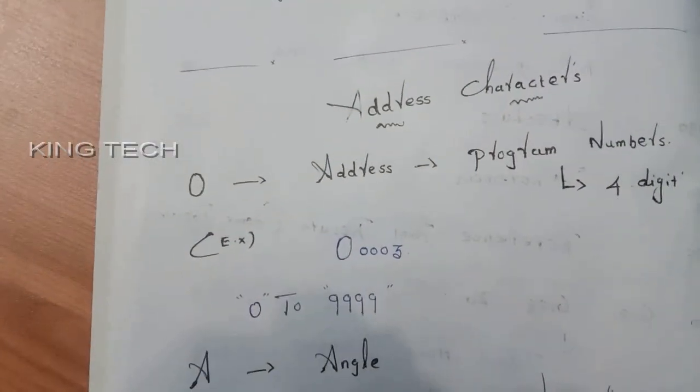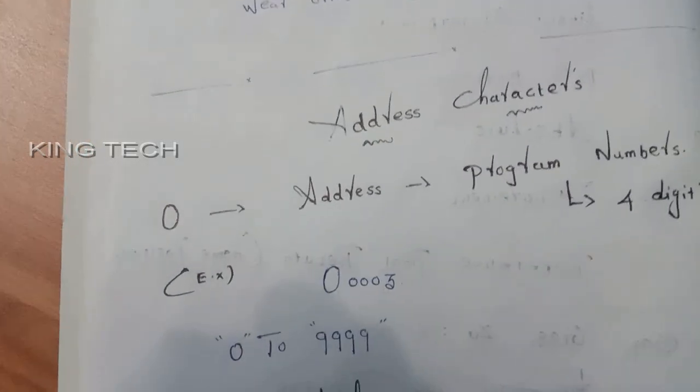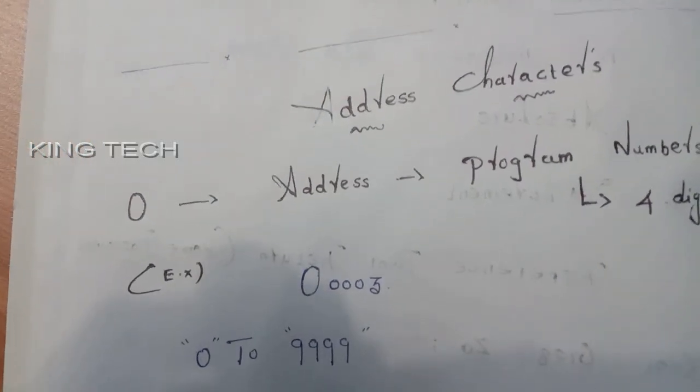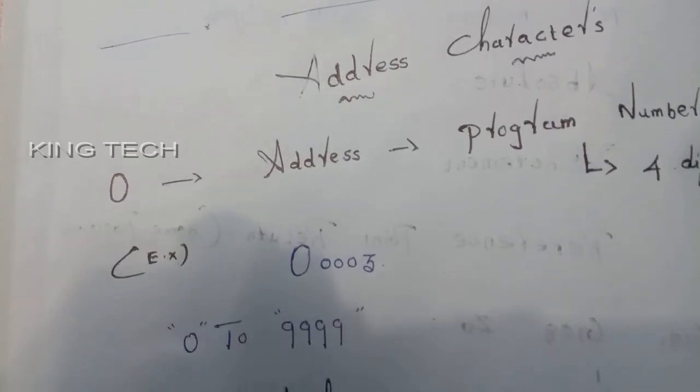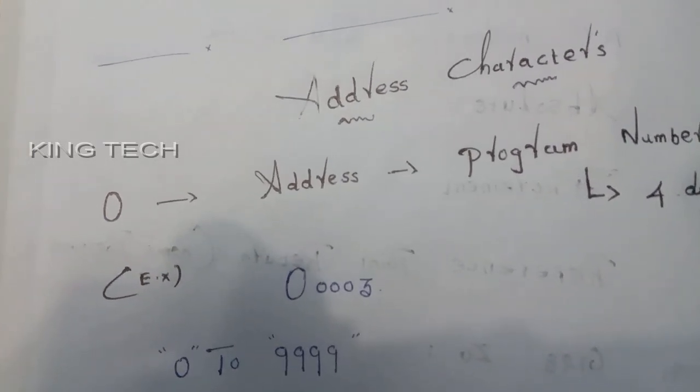Before UDS, we can explain address characters. Now, if we have a program, address characters main.